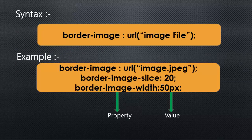The syntax for border-image passes values as a URL for an image file. Border-image is a shorthand property. For example, border-image-source takes a URL like image.jpg as the value. Border-image-slice takes a value like 20, and border-image-width takes a value like 50px.